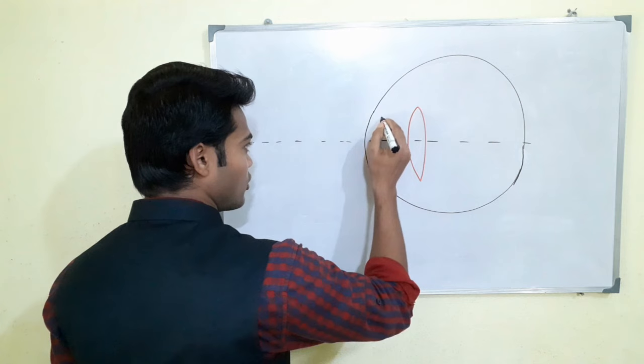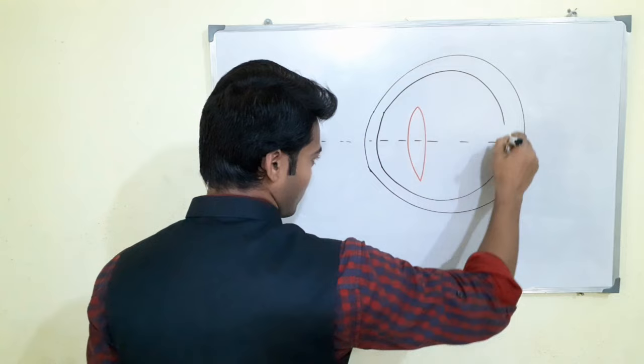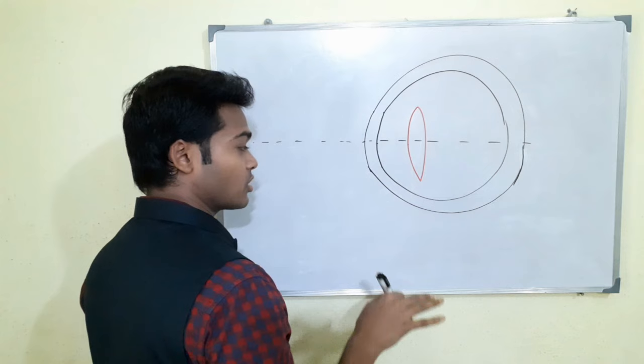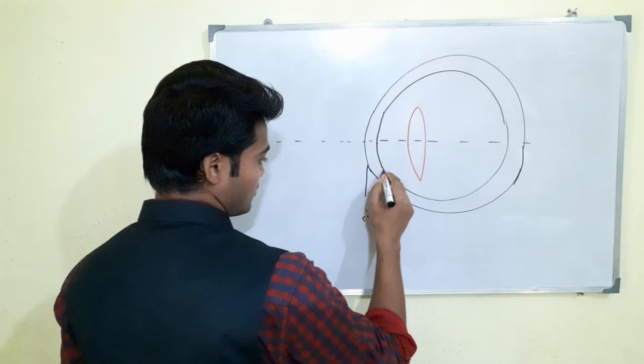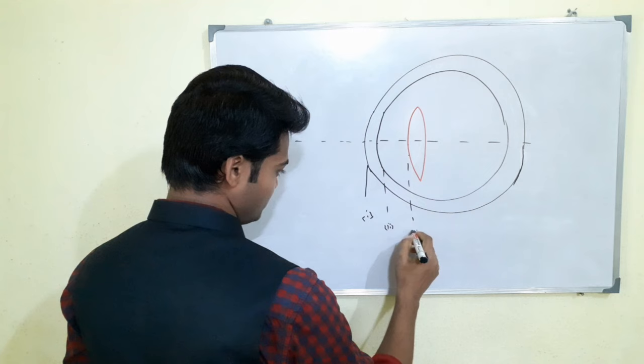Catoptric images are formed here. Simply assume this is the cornea - first layer, second layer, third layer, fourth layer. Purkinje or catoptric images are formed according to the anterior corneal first surface, then the second layer is formed according to this one, third layer according to this one, fourth layer according to this one.